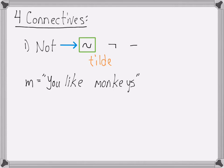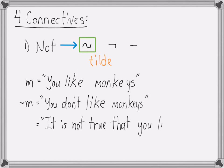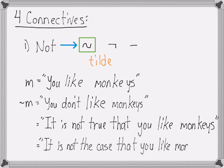For example, if m equals 'you like monkeys', then not m equals 'you don't like monkeys'. Another way to say this is that it is not true that you like monkeys, or it is not the case that you like monkeys. All of these are different ways of saying not m. Not is also called the negation.